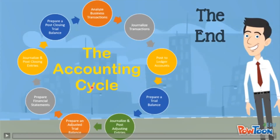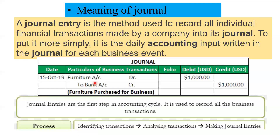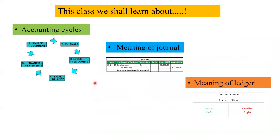So, what did we learn today? We learned about the accounting cycle. For first PUC level, five steps are required: one is source document, second is journal, third is T-account or ledger account, fourth is trial balance, and fifth is financial statement. Accounting cycle is nothing but the recording of business transactions into books of accounts — which may be the journal or the ledger.